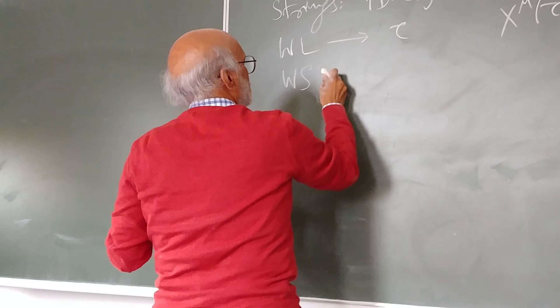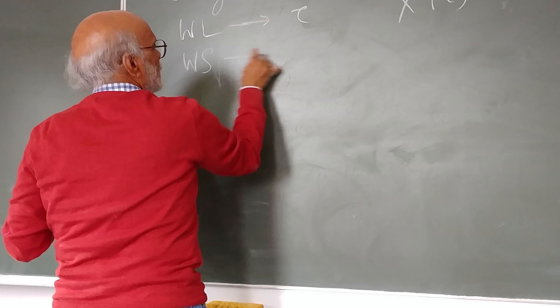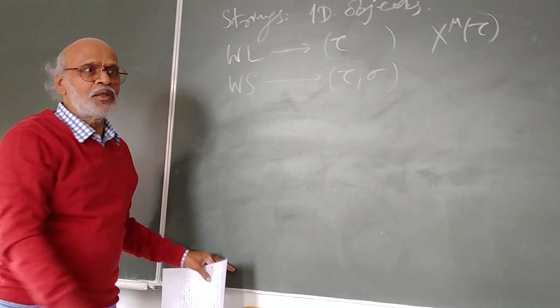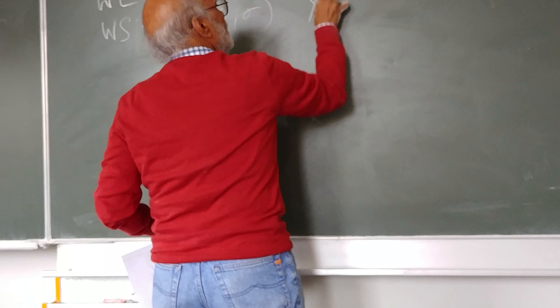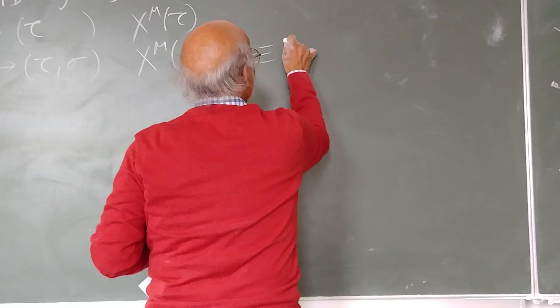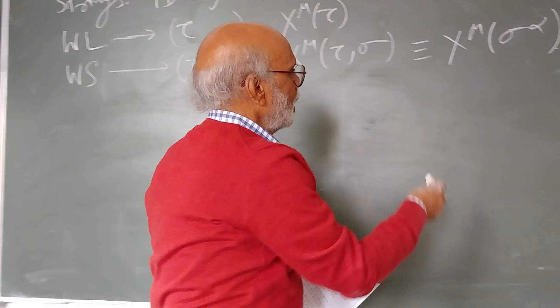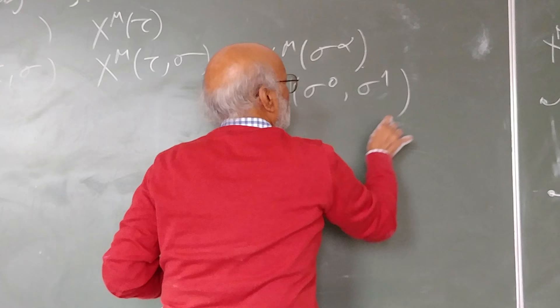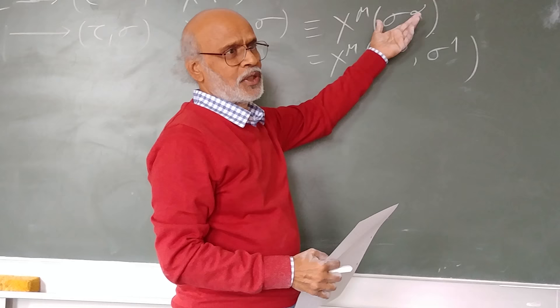This is for zero dimensional objects. For one dimensional objects, you have parameters tau and sigma - one additional parameter which describes the length of the string. Here x^mu is a function of tau and sigma both. I could even write it as sigma^0, sigma^1.